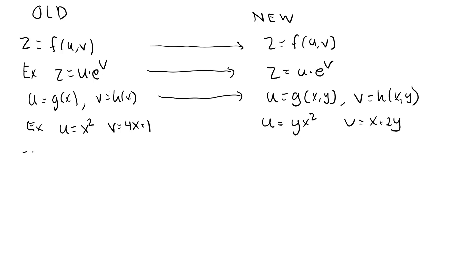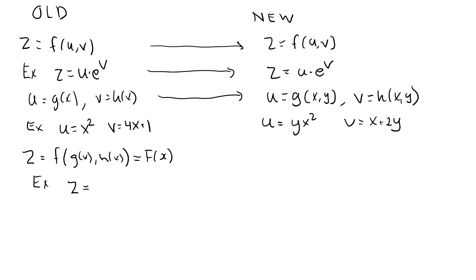When I made a composition in my previous case, I got z equal to f of u and v, where u was a function of x and v was a function of x. The entire composite function came out as a function of only x. In that example, we got z equal to x squared times e to the 4x plus 1.